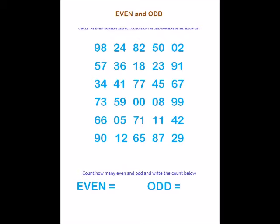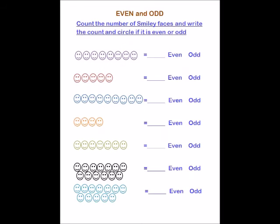In the next one, the child has to count the smiley faces and then write the count. Whatever the count they get, if it is an even number they have to circle even, and if it is an odd number they have to circle odd.